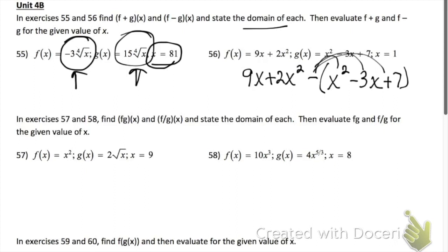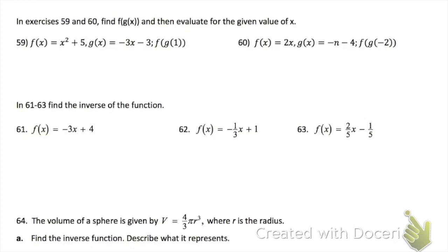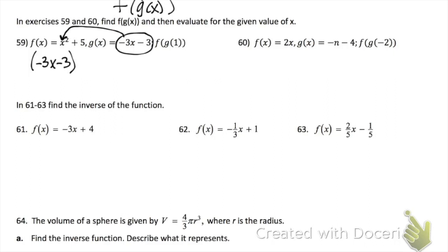Problems 57 and 58 want you to find f times g and f divided by g. Same idea — multiply the functions together and then evaluate at 9. Or put one over the other.